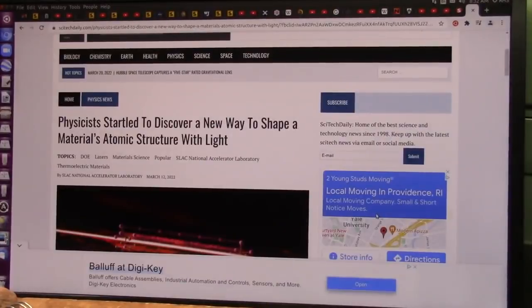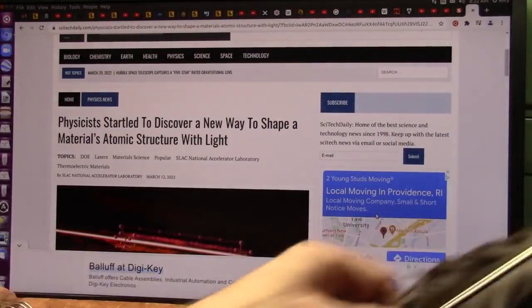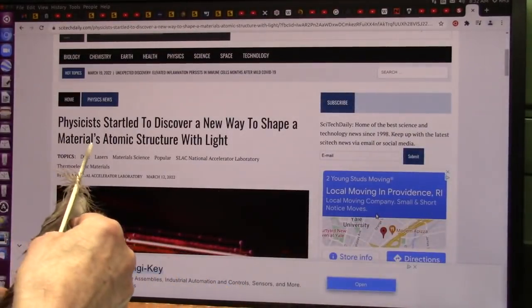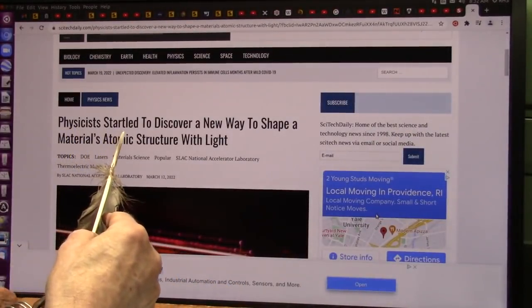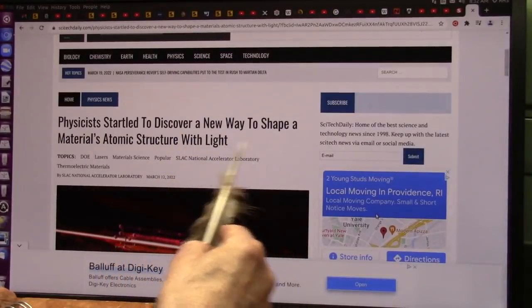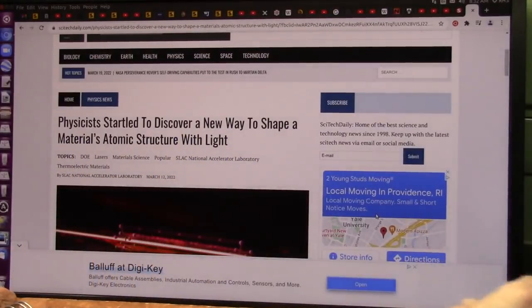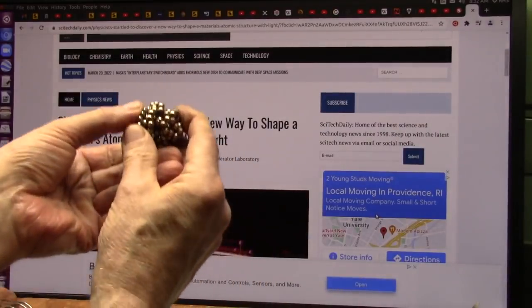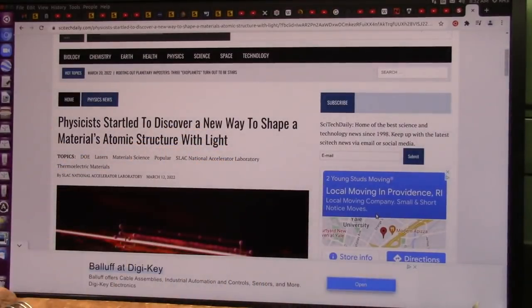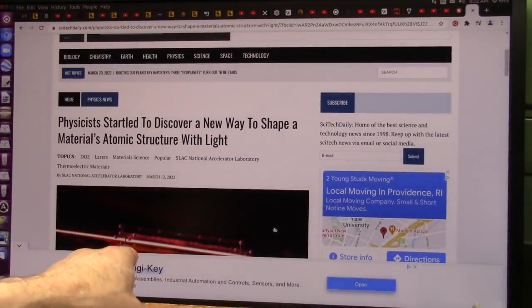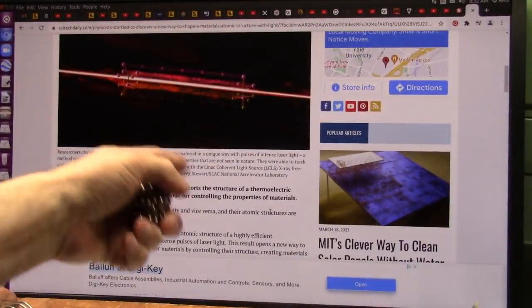This is a big one. We could create new materials with lasers. Physicists startled to discover a new way to shape a material's atomic structure with light. This is the nucleus. They're talking about the atomic nucleus, so it's exactly what we've been showing. Those sprays of particles are what create a nucleus.